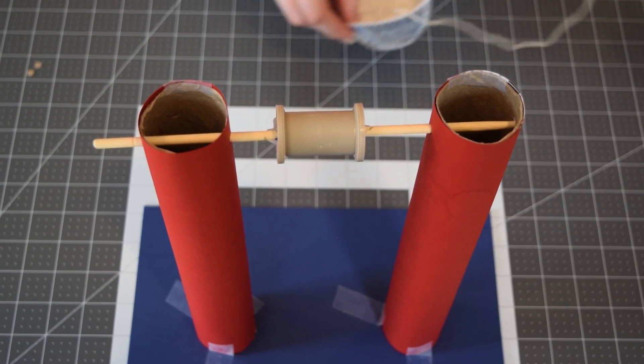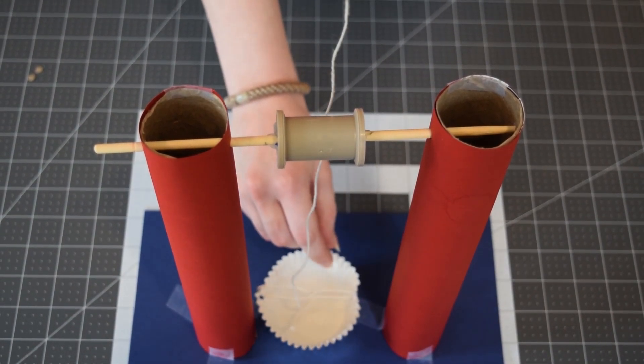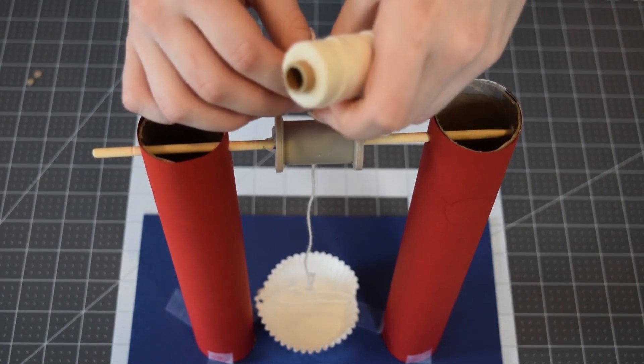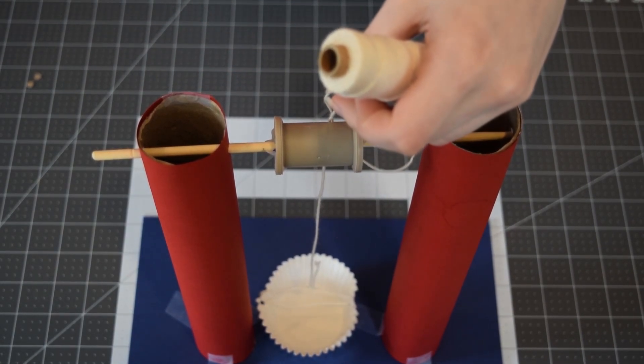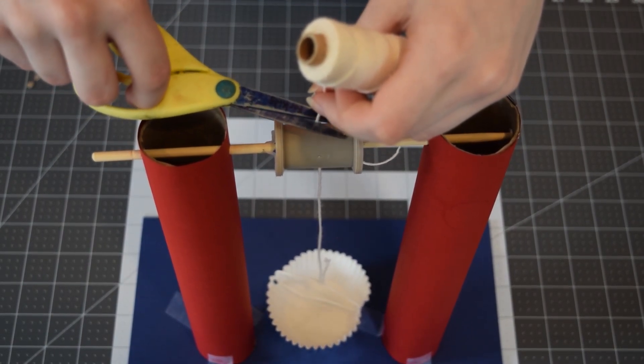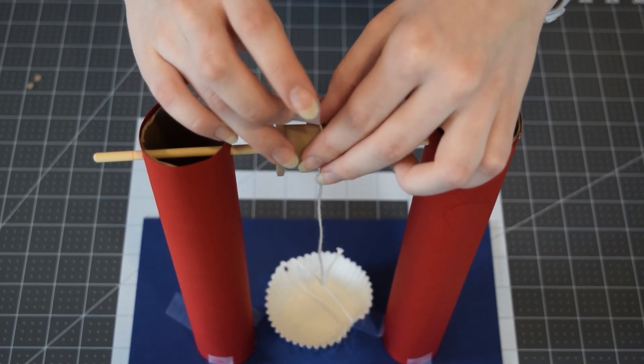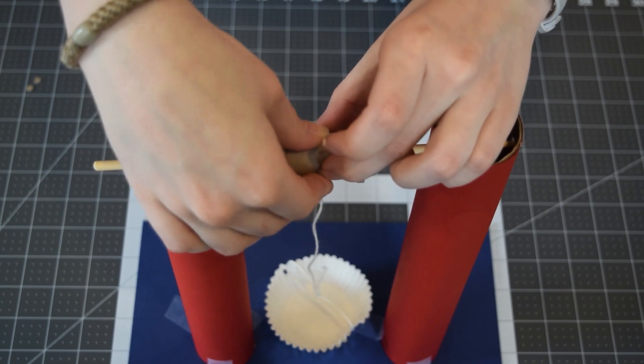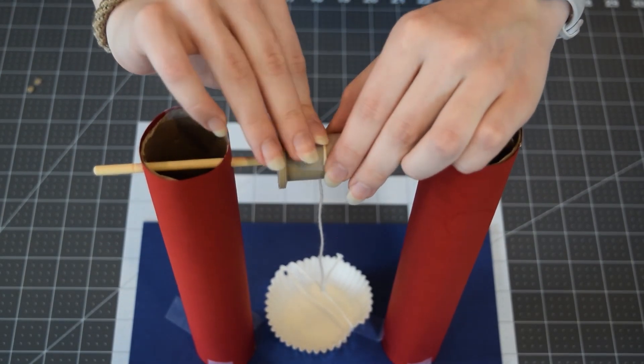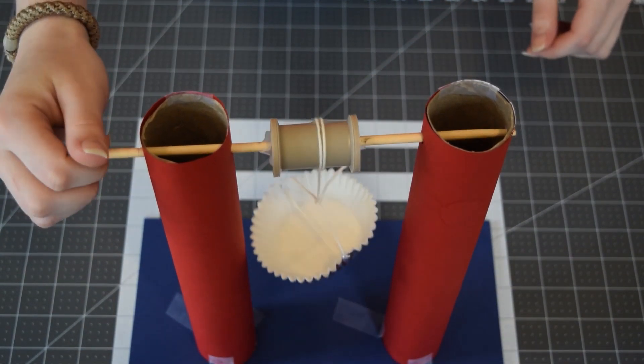Now we're going to put them together. Set the cup on your cardboard base and measure out enough string to reach the spool. Cut the string and tape it to the spool. Once the string is attached, you're all done.